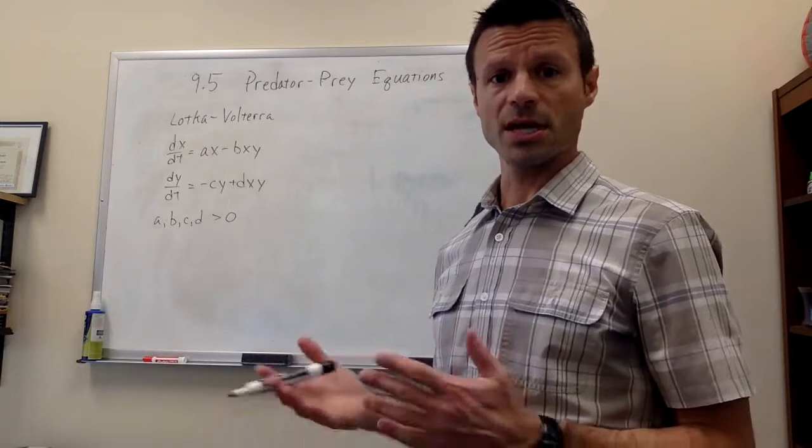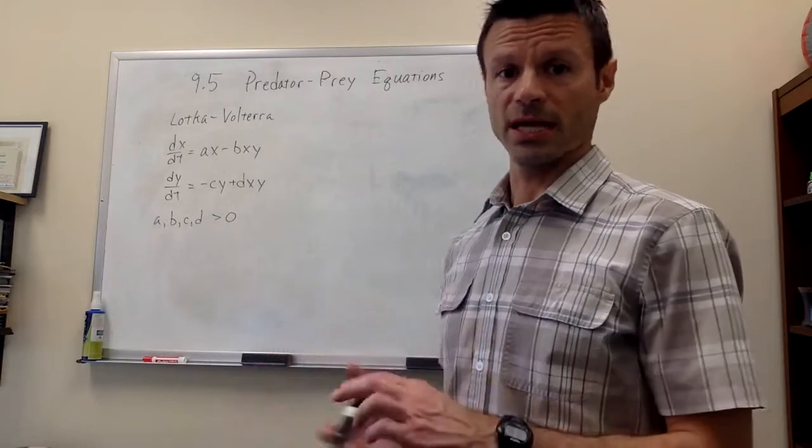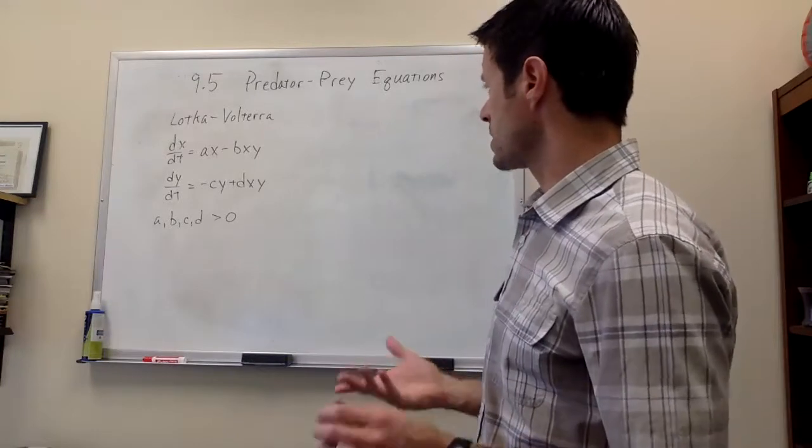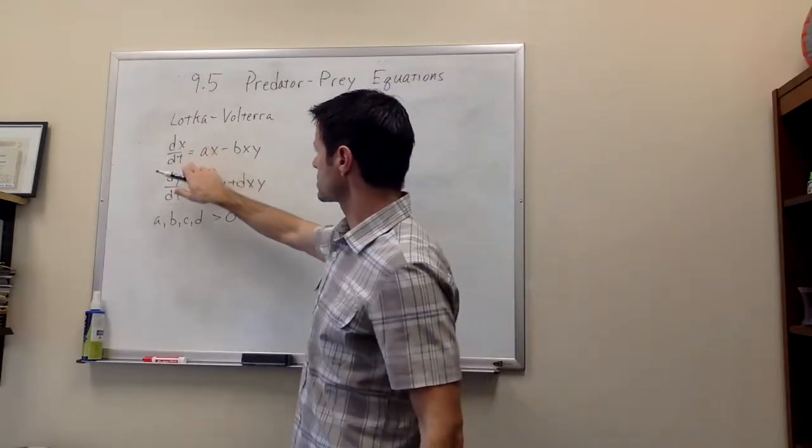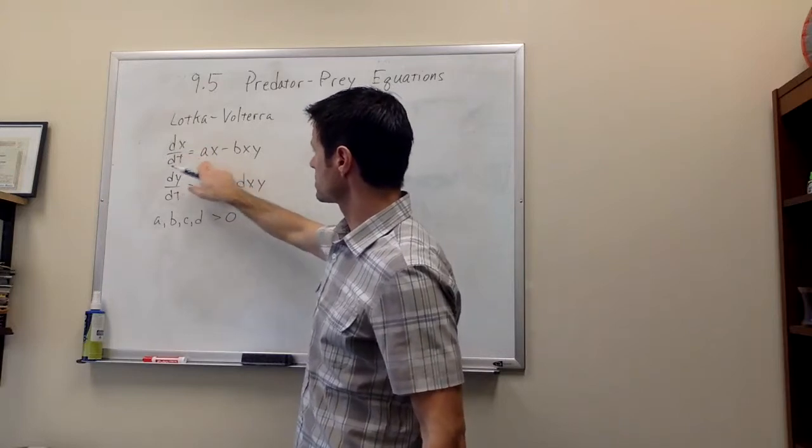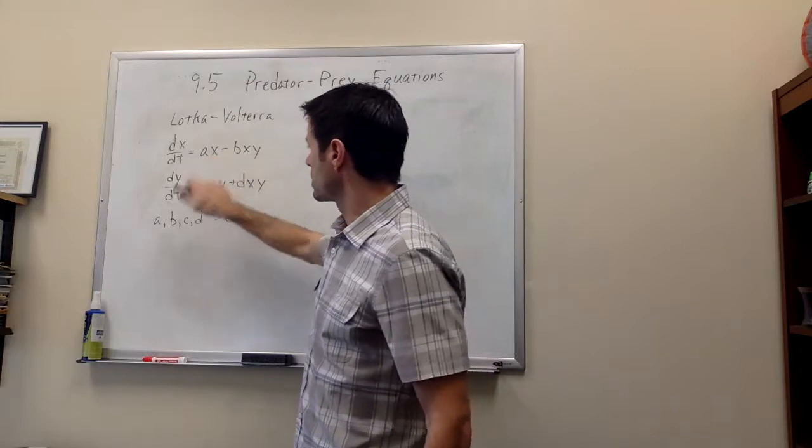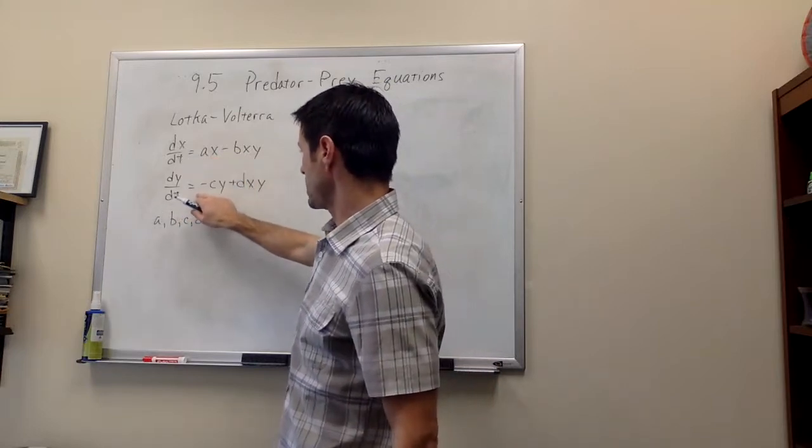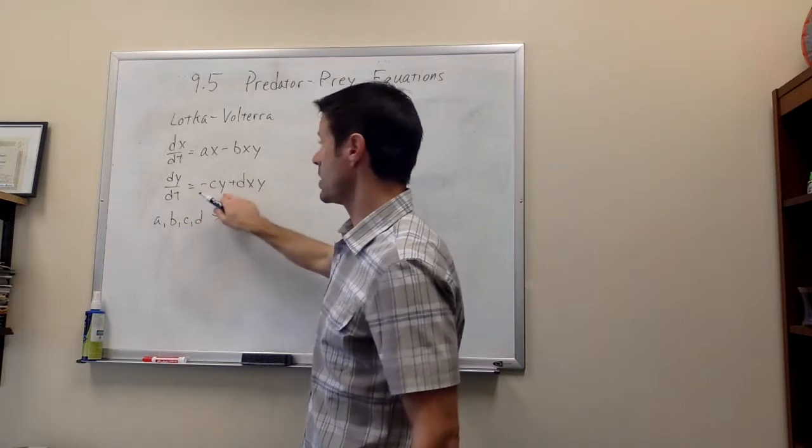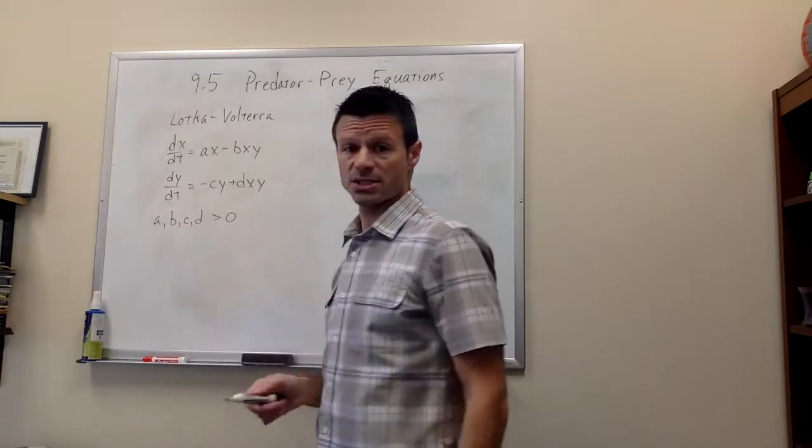We have two species, X and Y, where Y preys on X. The assumptions that we make are that the prey X grows exponentially, given by this AX term, and that the predator decays exponentially, given by this minus CY term. And of course the A and the C are considered positive parameters.